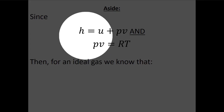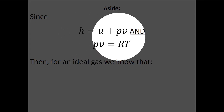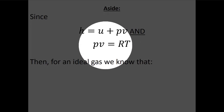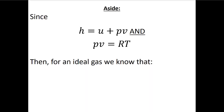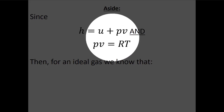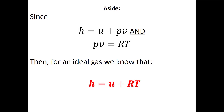As a textbook aside: by definition, specific enthalpy h equals specific internal energy u plus pressure times specific volume. If we're talking about an ideal gas, then P·v equals R·T. So for an ideal gas, specific enthalpy also equals specific internal energy plus the specific gas constant times temperature.